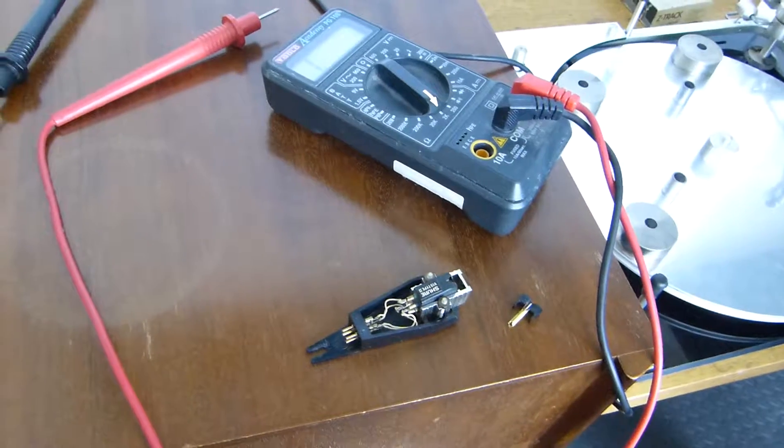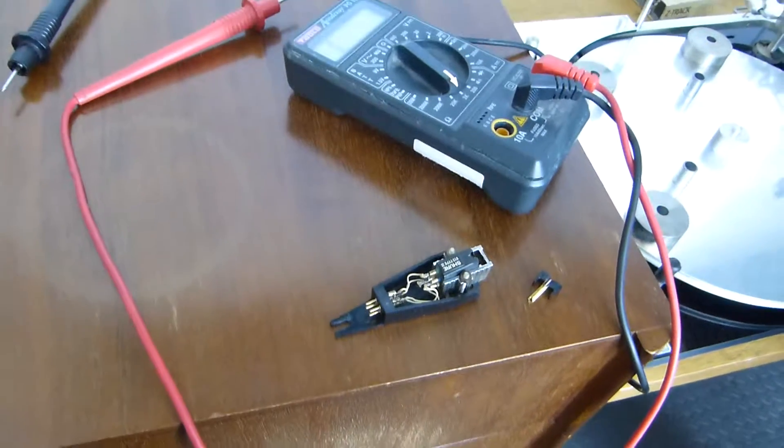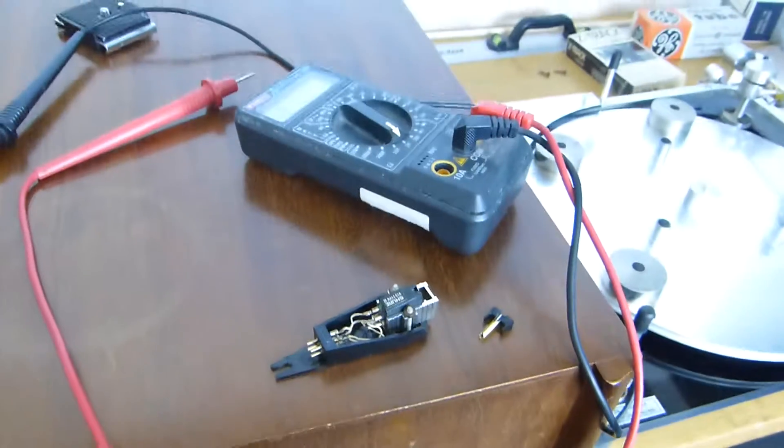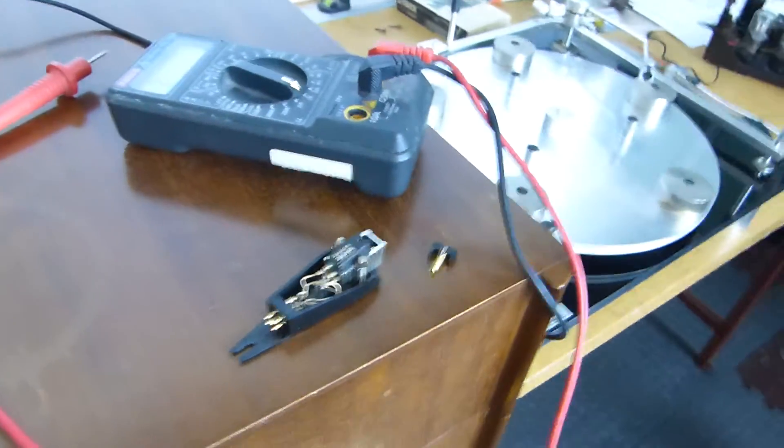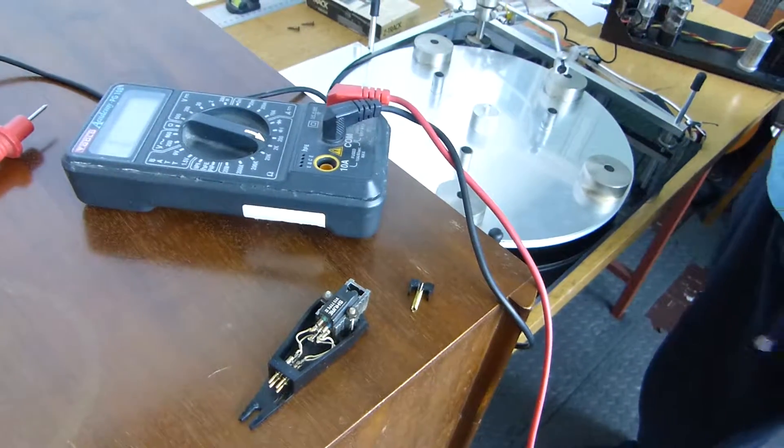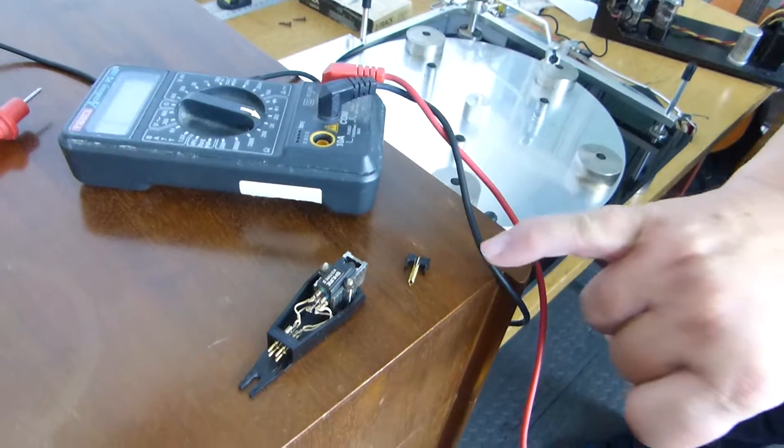This is designed to play without damaging the record. So it's a fixed coil—the coils are fixed. A moving coil cartridge is very different, an animal altogether, in that the magnets are fixed and the coil is attached to the end of that cantilever, so when the stylus moves, the coil moves near to the magnet.